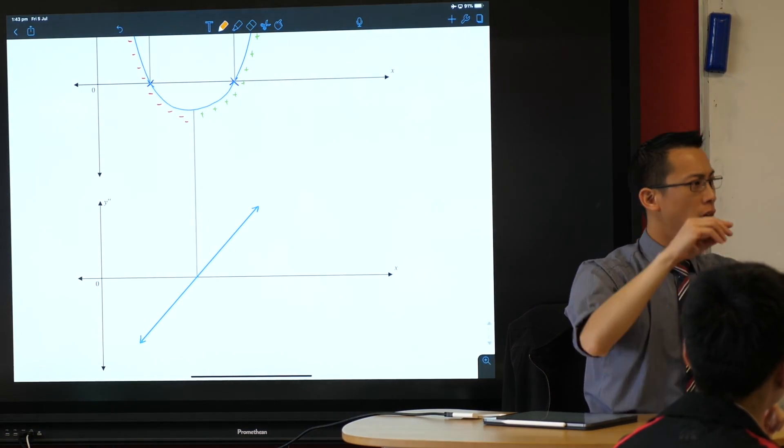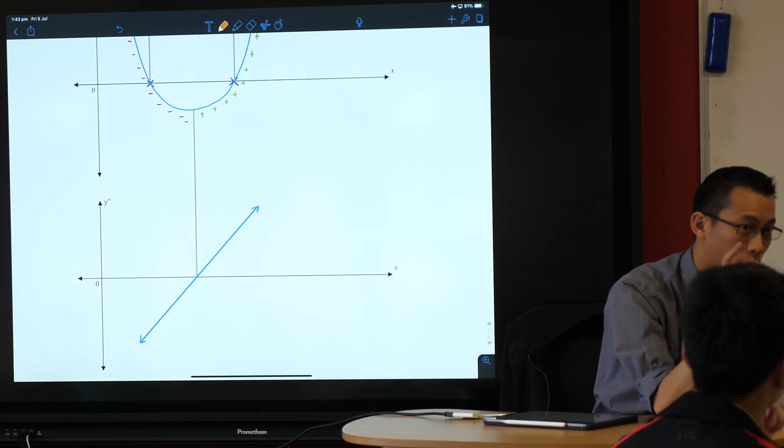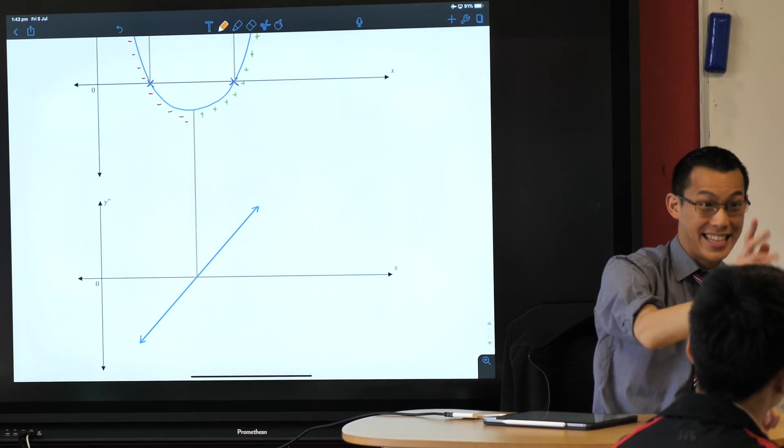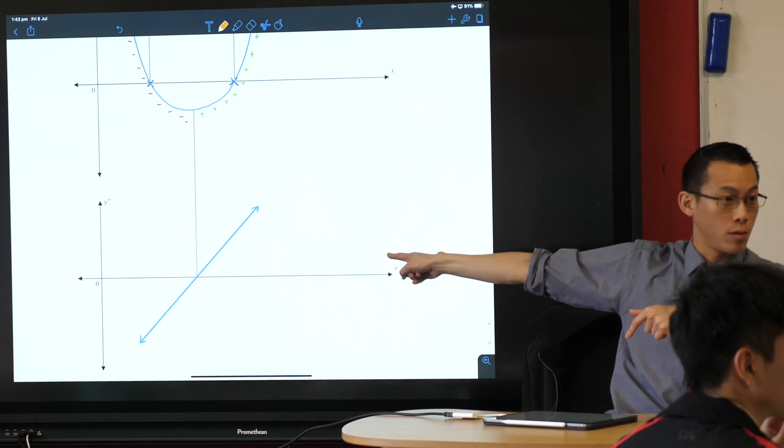So we call the shape a parabola, but we call the equation a quadratic. Cubic, quadratic, what's next? Just linear, a straight line, which is exactly what we've got.